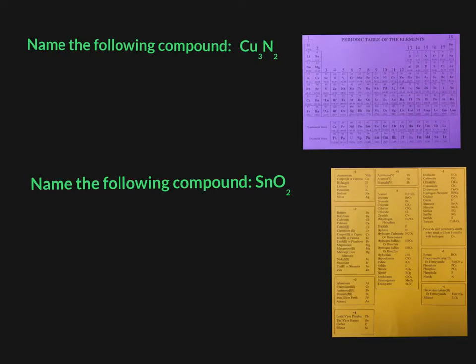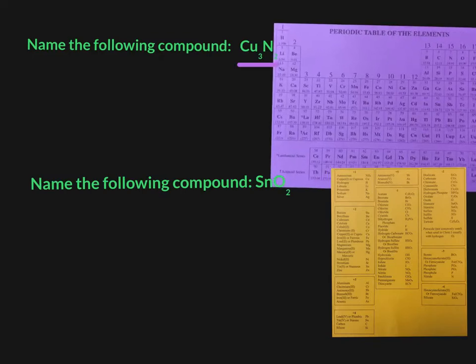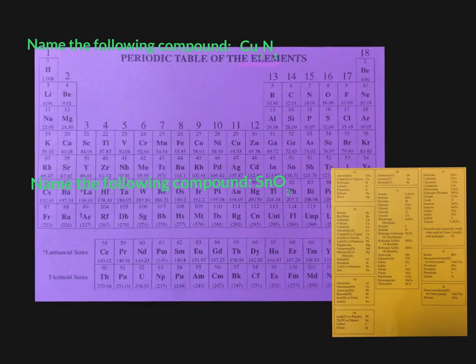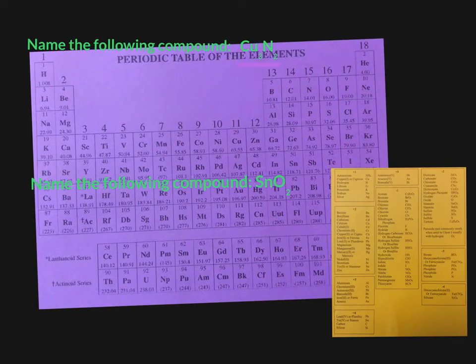Let's investigate this a little further. Let's take a look at a couple of examples here. Please copy down the examples, and then we'll talk about them. Here we have a compound, Cu3N2. So we have to decide about copper now.